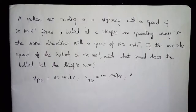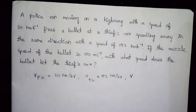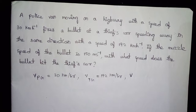Hello everyone. In this video we will talk about a policeman moving on the highway with a speed of 30 km per hour, who fires a bullet at a thief's car speeding away in the same direction with a speed of 192 km per hour. If the muzzle speed of the bullet is 150 meters per second, with what speed does the bullet hit the thief's car?